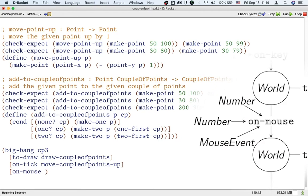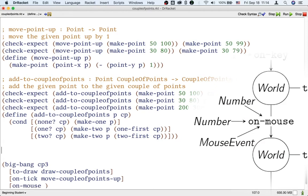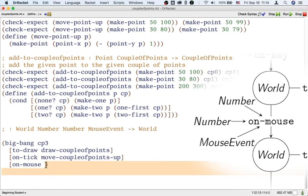Now, the on-mouse handler has to have a signature like this. It has to be taking a world as input, and a number, and a number, and a mouse event, and return a world. Whenever we give a mouse handler to Big Bang, it has to have this signature, or the Big Bang just won't work.